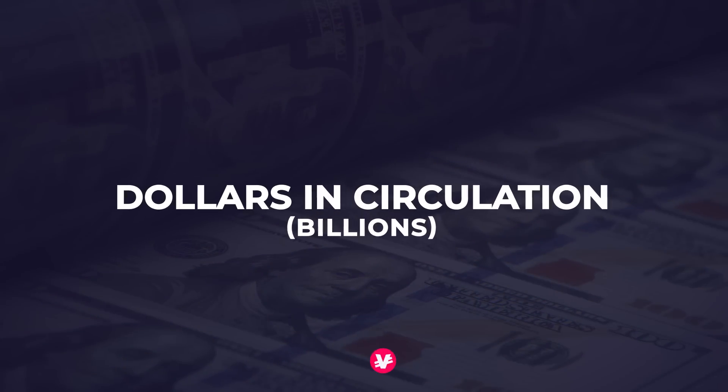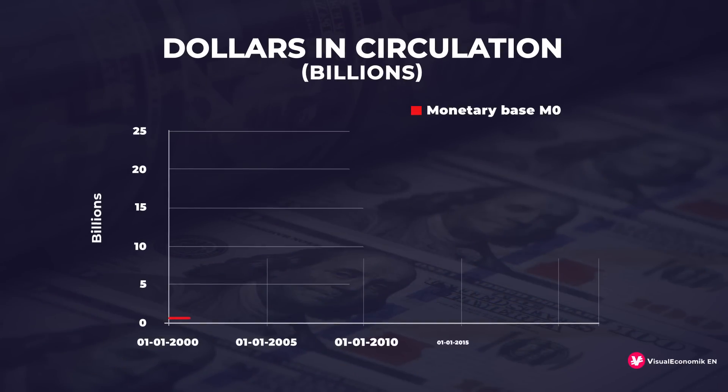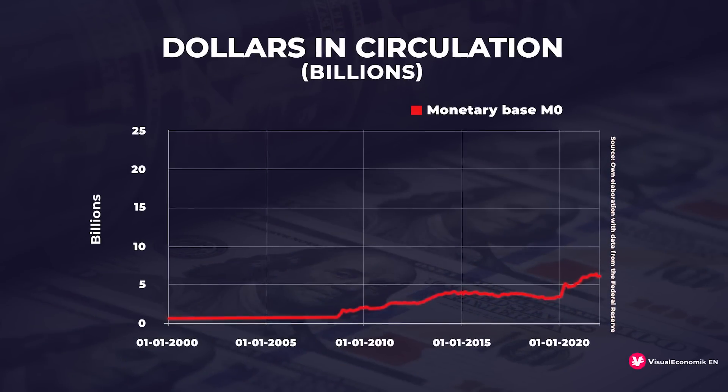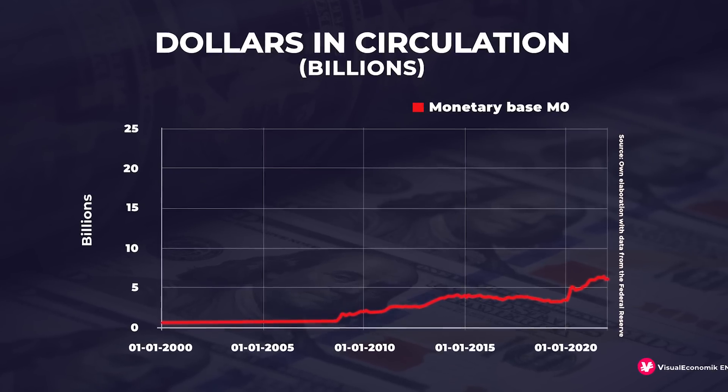The first thing we have to do is explain exactly what this conspiracy consists of. What you are seeing right now on the screen is nothing less than the total volume of dollars that are circulating in the global economy — all the money created by the Federal Reserve. Five trillion dollars that have been created over the last few years.